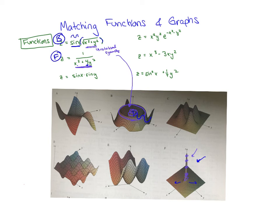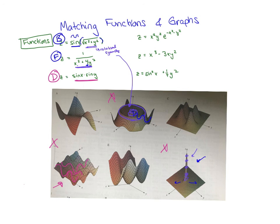Looking at another graph that has sine waves going in both the x and y directions — the function sin(x)·sin(y) means when x is constant I see sine y, and when y is constant I see sine x. So that matches graph d. The function sin²(x) + ¼y² has only squared terms so it should be always positive — it can't be graph a, so it must be graph e or c.